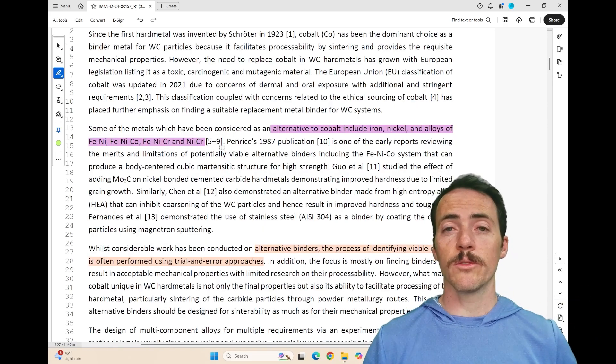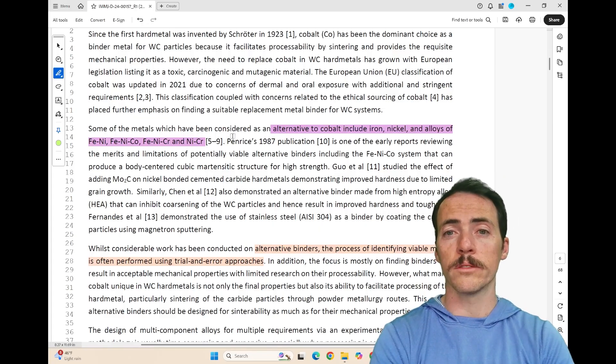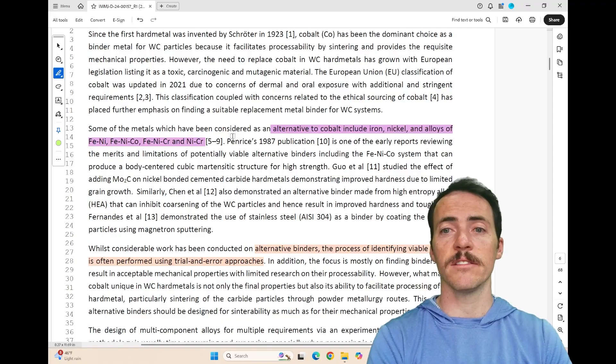Now, this work does build on some previous work. For example, references five through nine identify a number of different alternatives to cobalt, iron, nickel, and alloys of the same that have been explored in this 1987 publication.